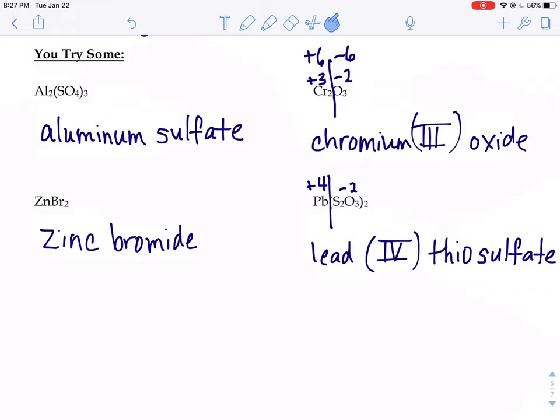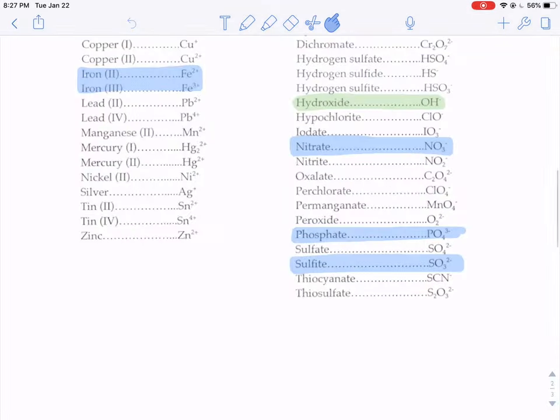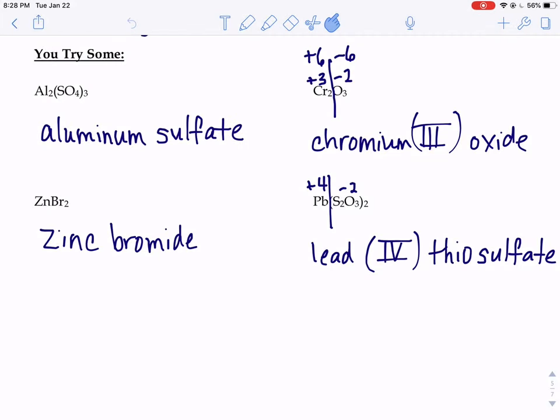There's no need to have a Roman numeral with aluminum because when you look at where aluminum is on the periodic table, you know that the charge on that aluminum is always going to be plus three. No Roman numeral necessary.